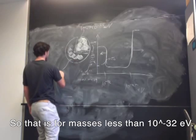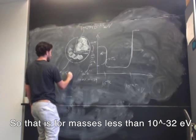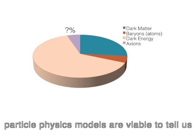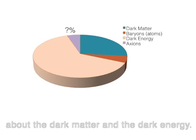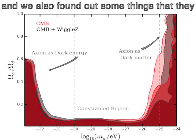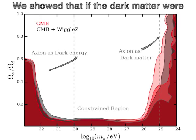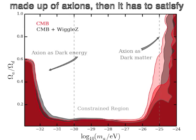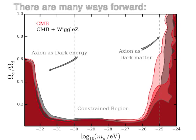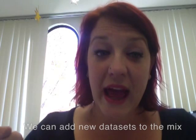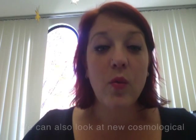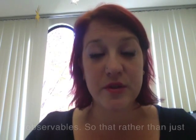In this paper, we looked at what kind of particle physics models are viable to tell us about the dark matter and the dark energy. We learned what the dark matter and the dark energy are allowed to be, and we also found out some things that they were not allowed to be. We showed that if the dark matter is made up of axions, then it has to satisfy pretty stringent constraints on the masses — there's a whole range of masses that it's just not allowed to be.